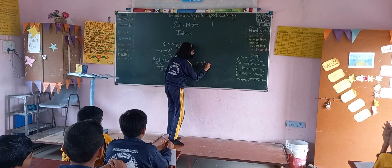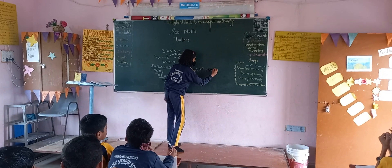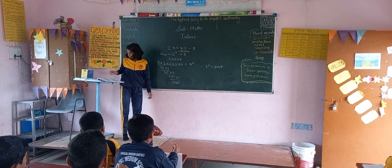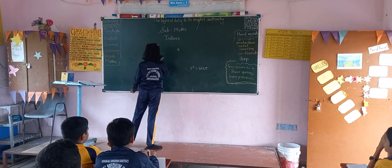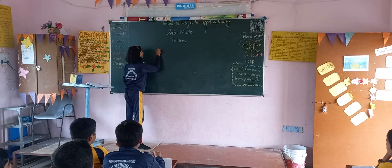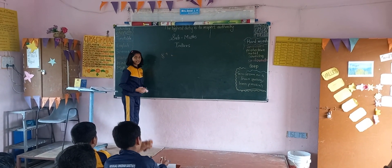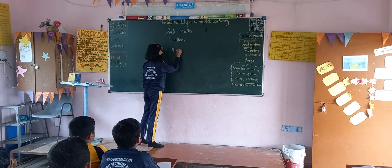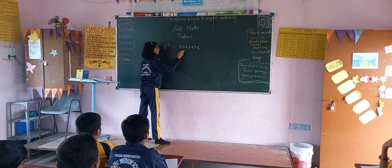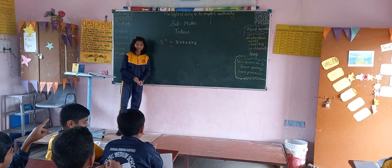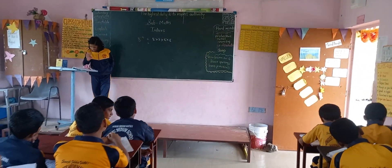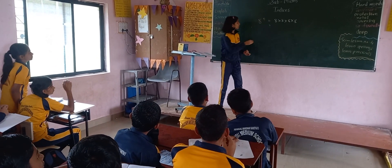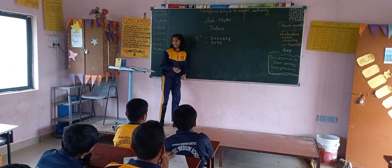Therefore, 5 raised to 5 is equal to 3125 — that's the correct answer. Now, another example: 8 raised to 4. The multiplication form will be 8 multiplied by 8 multiplied by 8 multiplied by 8, and the value is 4096. Yes, that is the correct answer.